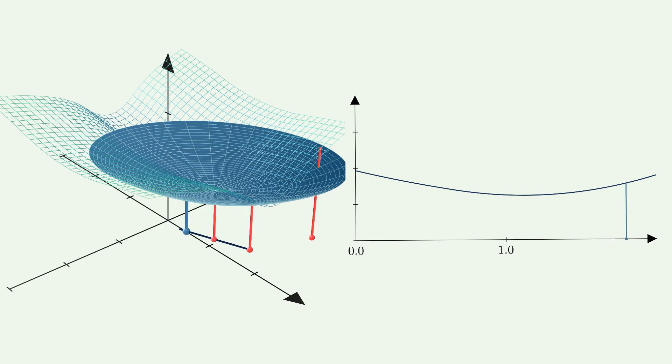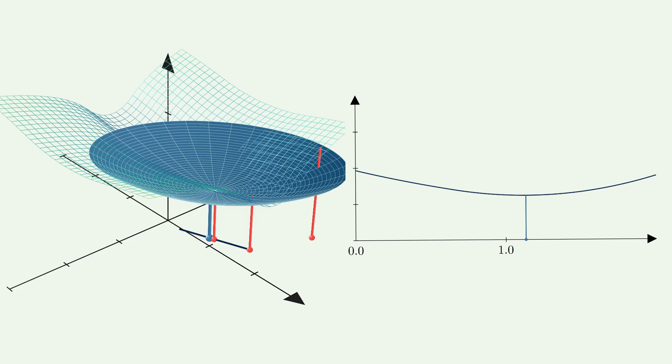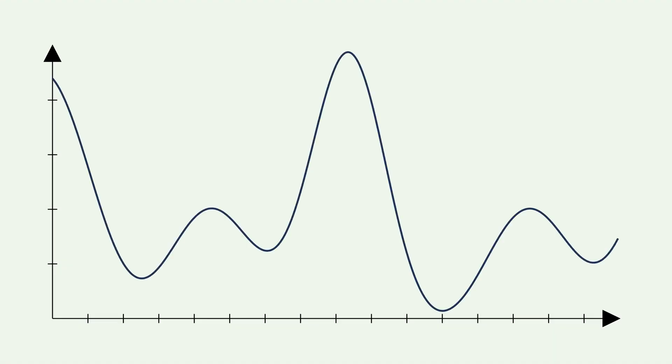The minimum of this function corresponds to the best step size we can take. An ideal line search would search for the exact minimum of this function. In the case of our original function we might be able to find this exact minimum, but often we have a more complex function where it is harder to find the exact minimum. Therefore the line search needs to be able to work also with a more complex example.